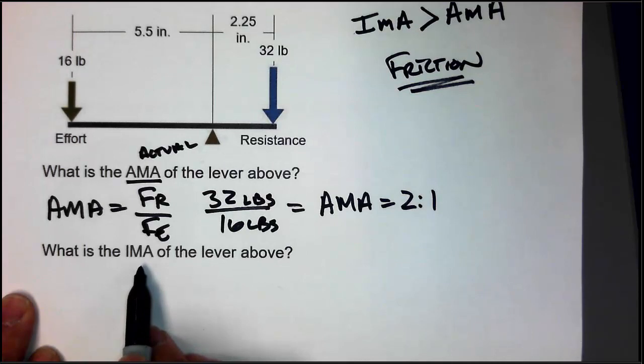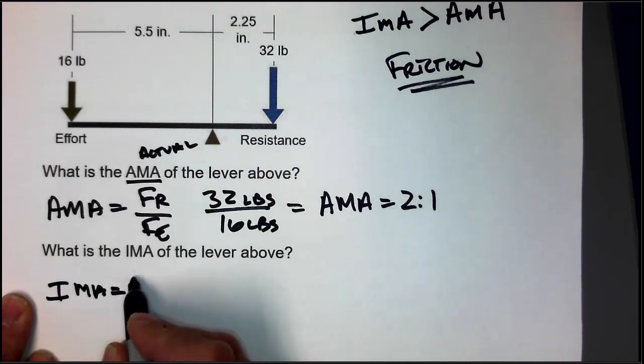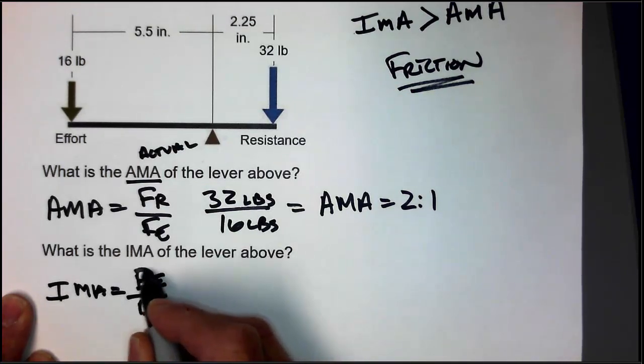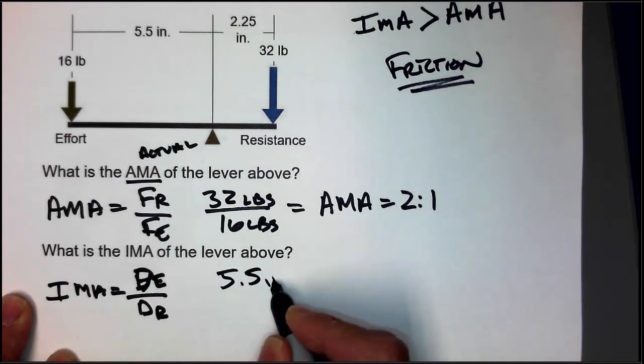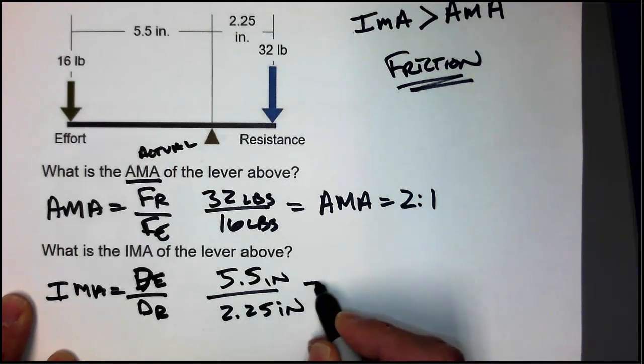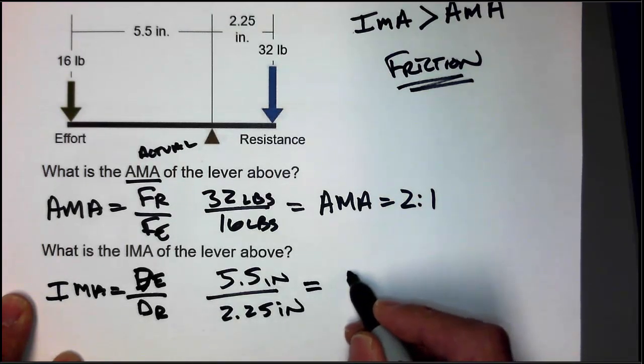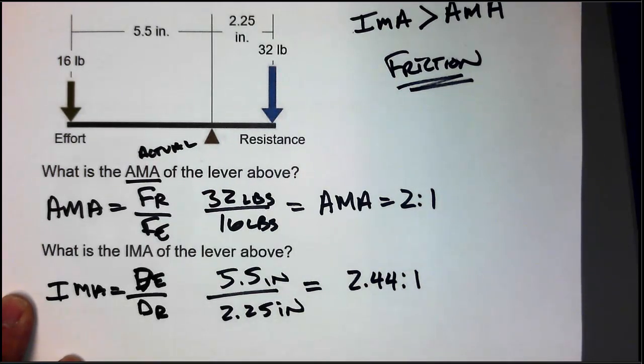So, when we go to calculate the IMA, the formula for IMA is IMA equals the distance E over distance R. So, that's going to be 5.5 inches over 2.25 inches, and that's going to come out to 2.44 to 1 after we do that math.